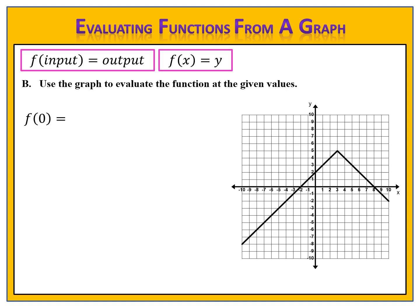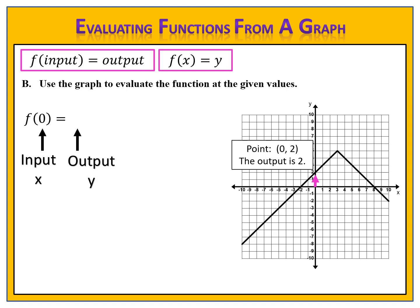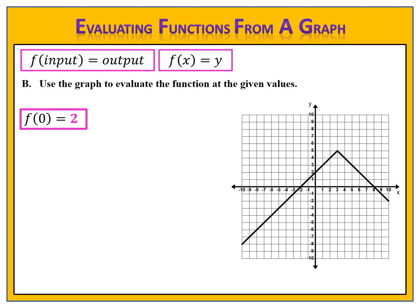Finally, f of 0 equals something. F of input equals output — the input is 0 and the output is what we want to find. We go across the x-axis, look for the input of 0, and see what the point is there. The point is (0, 2) — input 0, output 2. Therefore, f of 0 equals 2.